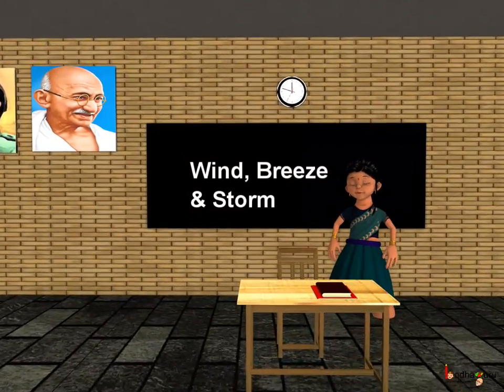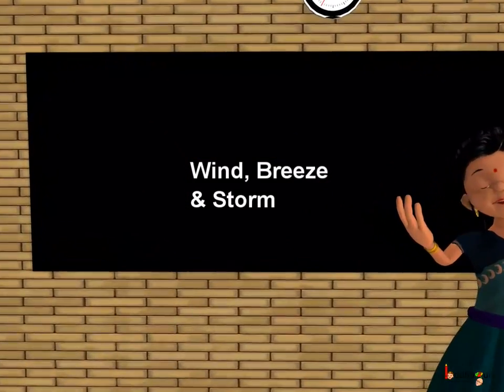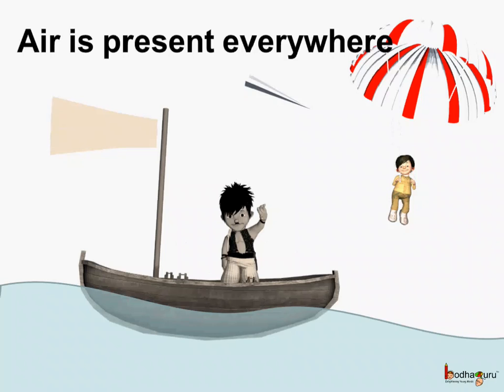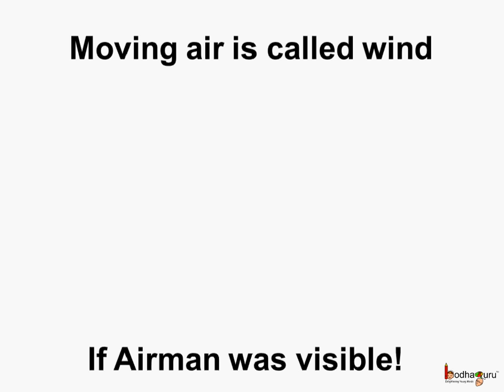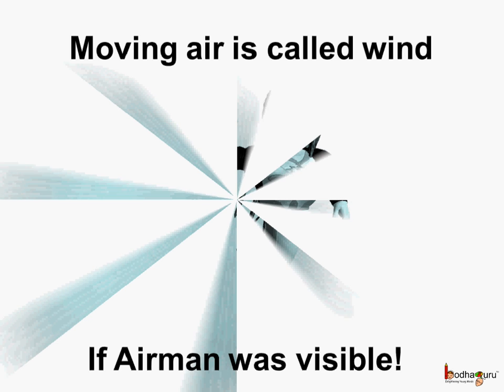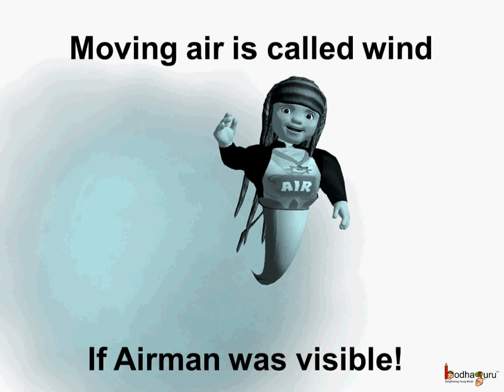Good morning children. Let us learn more about air. We already know air is present everywhere and it is very useful to us. We know the moving air is called wind and the air is not visible to us. But what if there was an airman and he was visible to us? Let us see the different moods of airman.